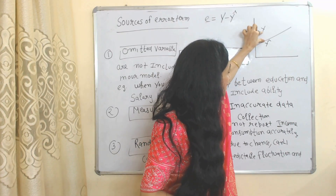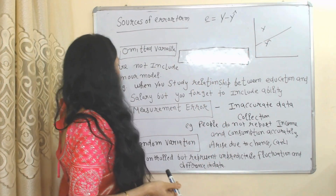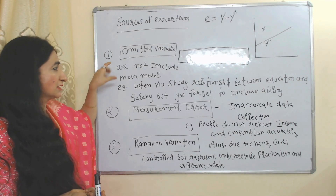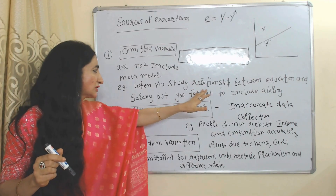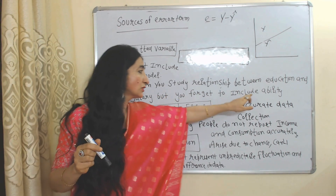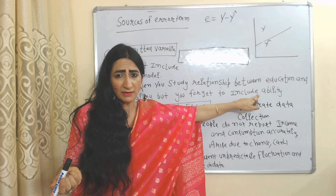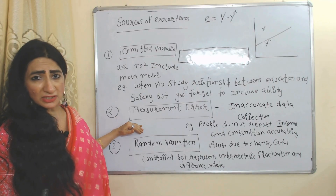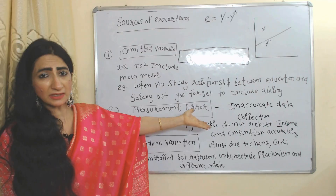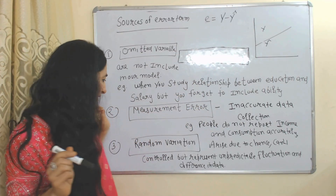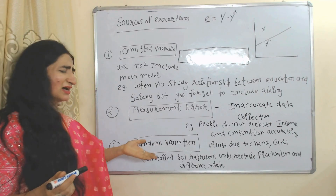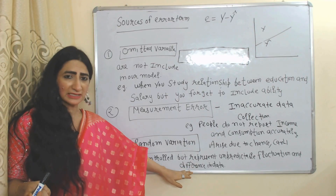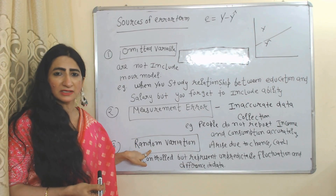Now we will see the sources of the error term. The first source is omitted variables — variables we don't include in our model. For example, when studying the relationship between education and salary, if we forget to include ability, that becomes an omitted variable which creates error in our model. The second source is measurement error — sometimes inaccurate data collection occurs, for example, people do not report their income and consumption accurately. The third source is random variation, which arises due to chance, cannot be controlled, and creates unpredictable fluctuations in data, becoming a main source of error.